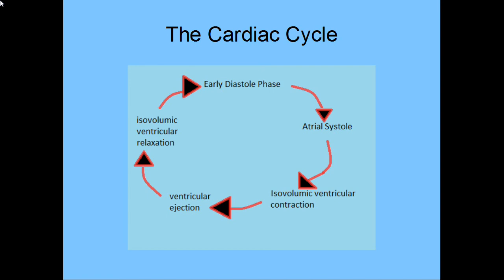After this we have ventricular ejection, where the ventricle completely contracts and the blood is pumped around the body. After this we have the isovolumic ventricular relaxation, which is where the ventricles relax and the volume is unchanged, but at this point the atria also begins to relax and they begin to fill up again, to start off with the early diastole phase.